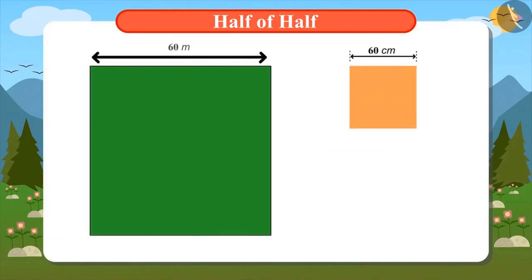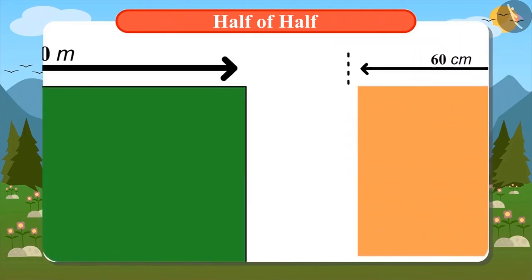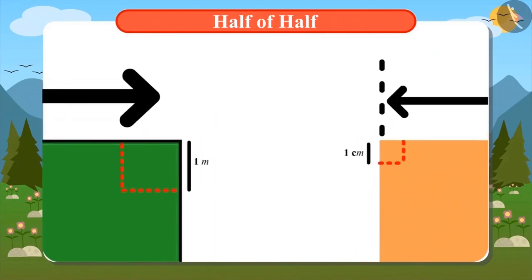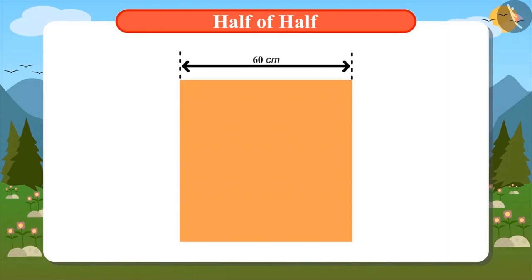The length of our field is 60 meters and the length of this paper is 60 centimeters. That means, one meter of the field is taken as one centimeter on paper. I am trying to divide our field into four equal parts on this paper so that I can plant one crop in one-fourth part.